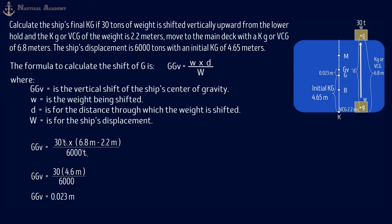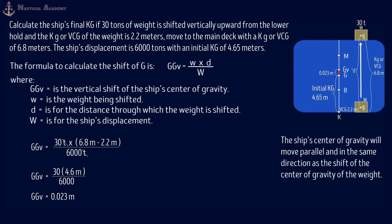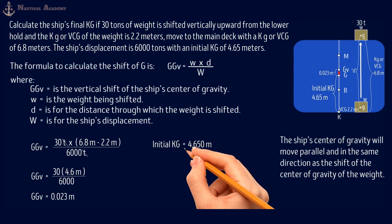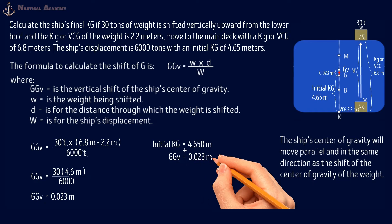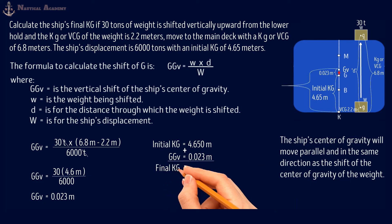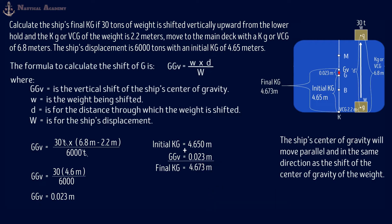Since the ship's center of gravity moves upward after shifting the weight, the ship's KG increases, so we will add GGV to the initial KG to find the ship's final KG, which is 4.673 meters. To find the KG or VCG of the weight, you can refer to the ship's stability manual or the ship's plan.